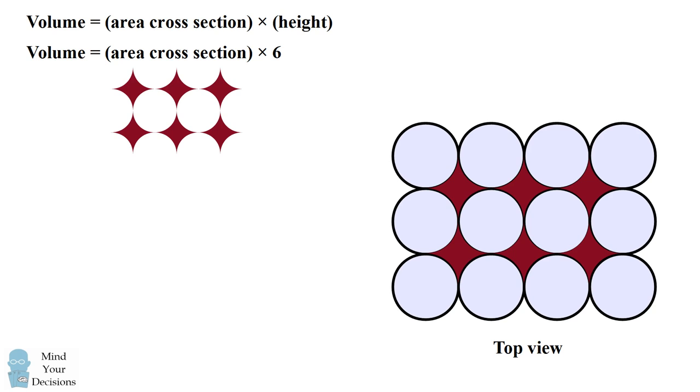We therefore can simplify this to say the volume is equal to 6 times the area of a single gap multiplied by the height of 6. So the volume is equal to 36 times the area of the single gap between 4 marshmallows.